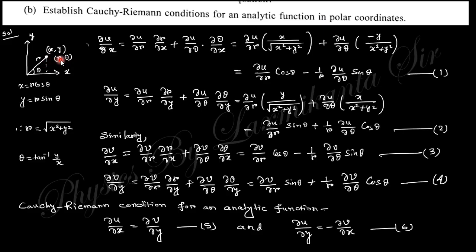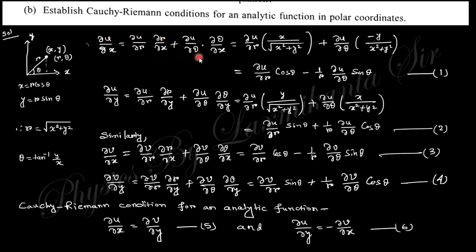In the polar coordinate system (r, θ), the relation between Cartesian and polar coordinates is x = r·cos θ and y = r·sin θ, from where you get r = √(x² + y²) and θ = tan⁻¹(y/x). So ∂u/∂x can be written as (∂u/∂r)(∂r/∂x) + (∂u/∂θ)(∂θ/∂x), because x is a function of r and θ, and y is also a function of r and θ.